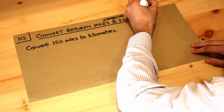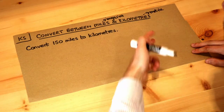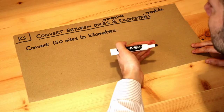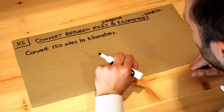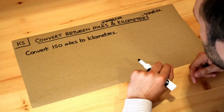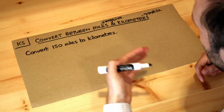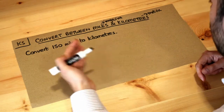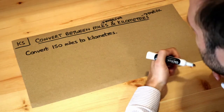Metric units always go in tens, hundreds, thousands. So for example, one kilometre is a thousand metres. Whereas imperial units are more traditional units where there's often some kind of random change between one thing and another. For example, there's 12 inches in a foot, there's three foot in a yard — these numbers are seemingly quite random and arbitrary.